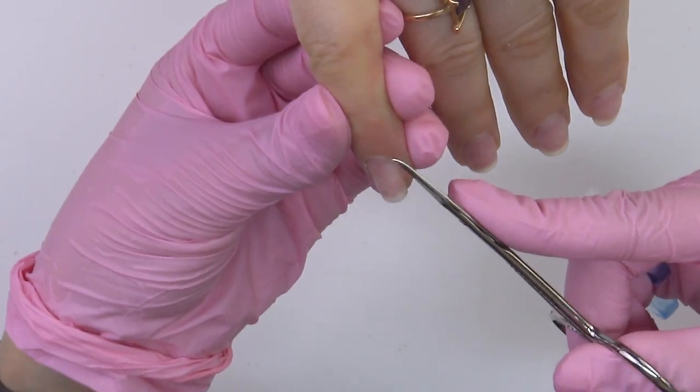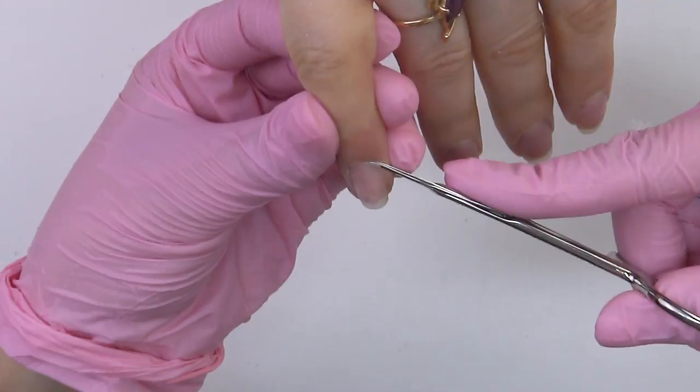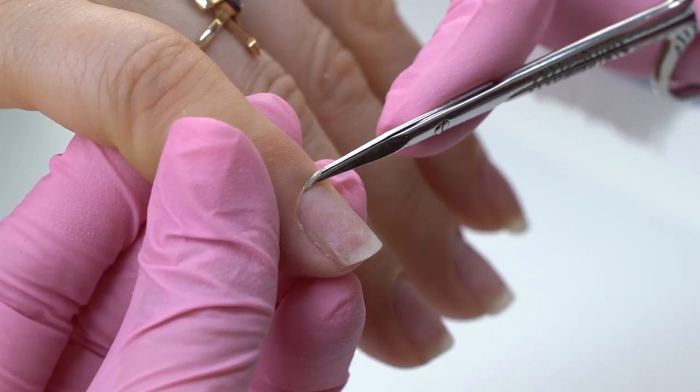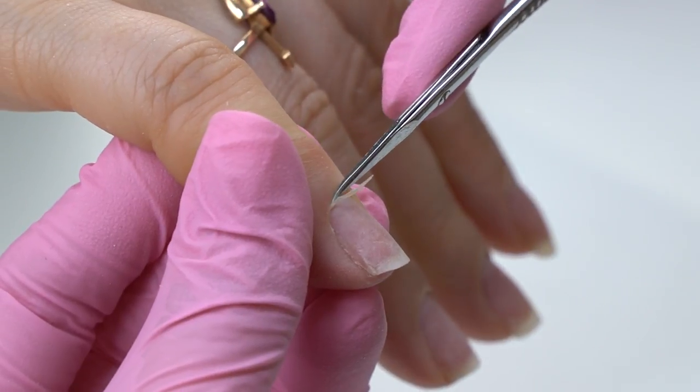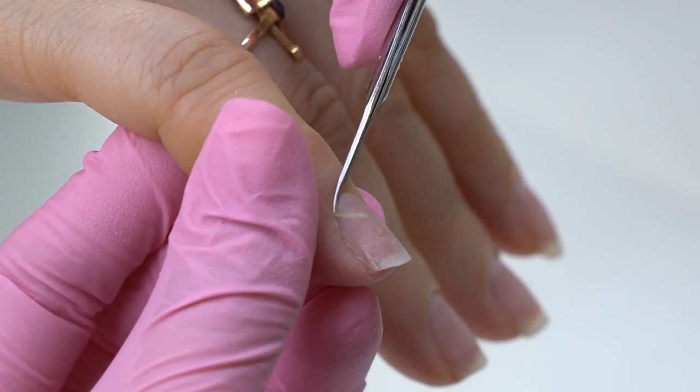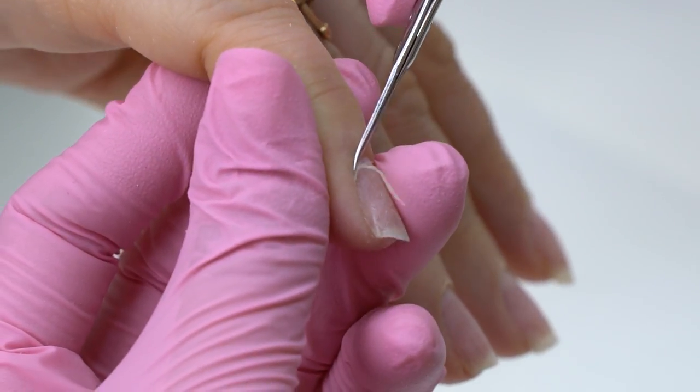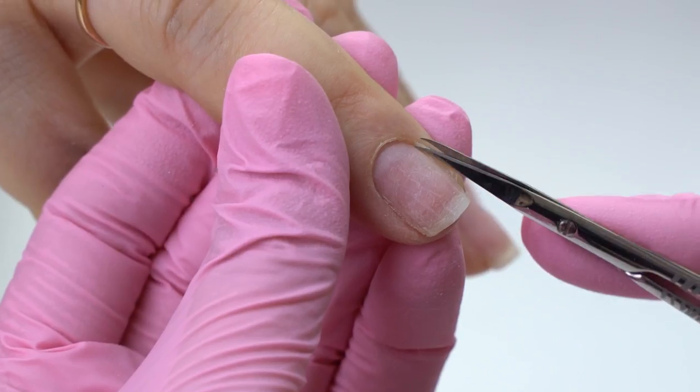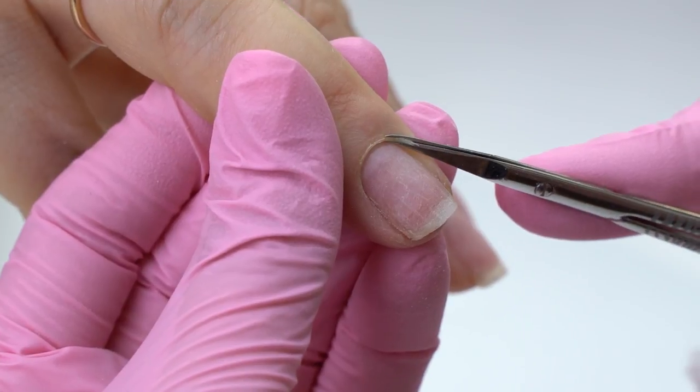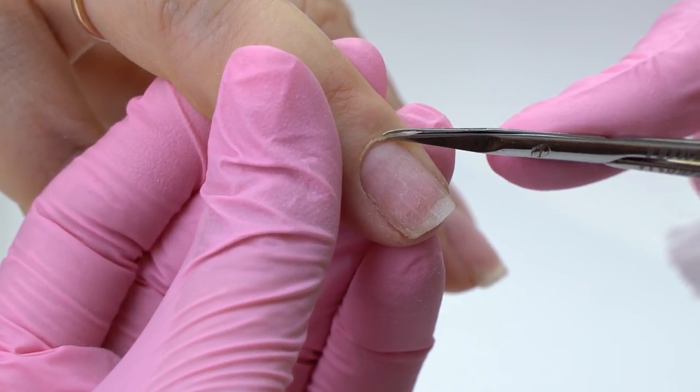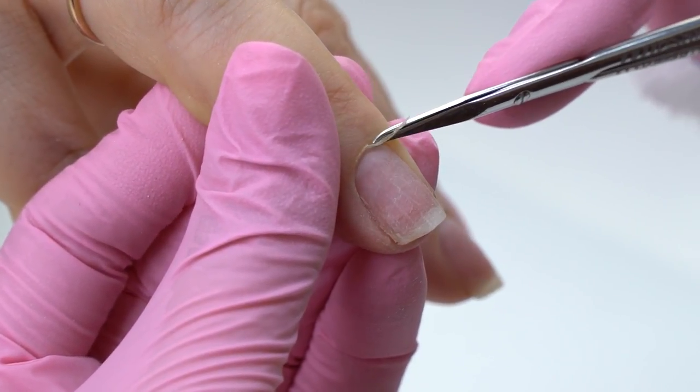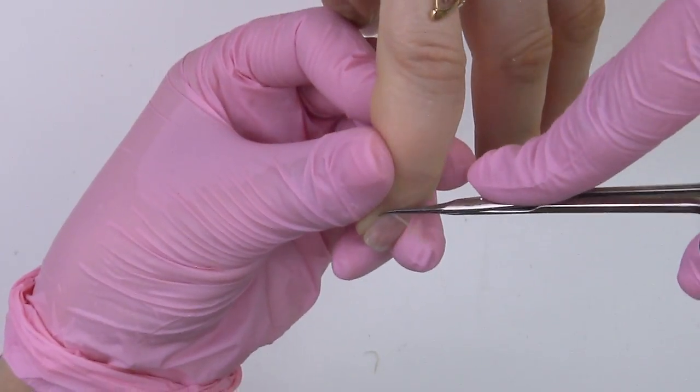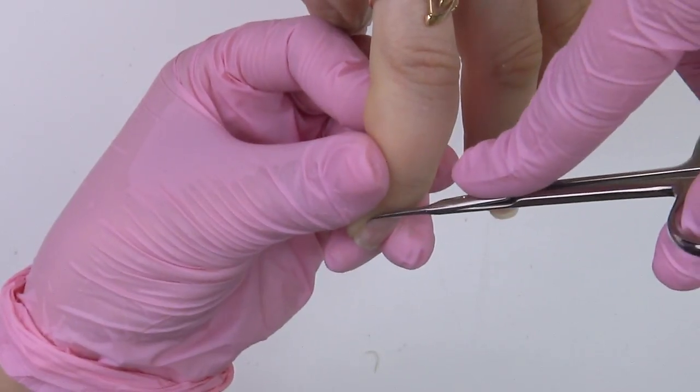Cut the cuticle. I'm using curved scissors. They are very comfortable. This cuticle is just right for this cutting method. There are some tiny hangnails left. I need to touch them up.